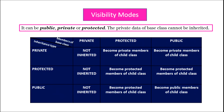In protected inheritance, private members of the base class are not inherited. Protected members of the base class become protected members of the child class, and public members of the base class also become protected members of the child class.